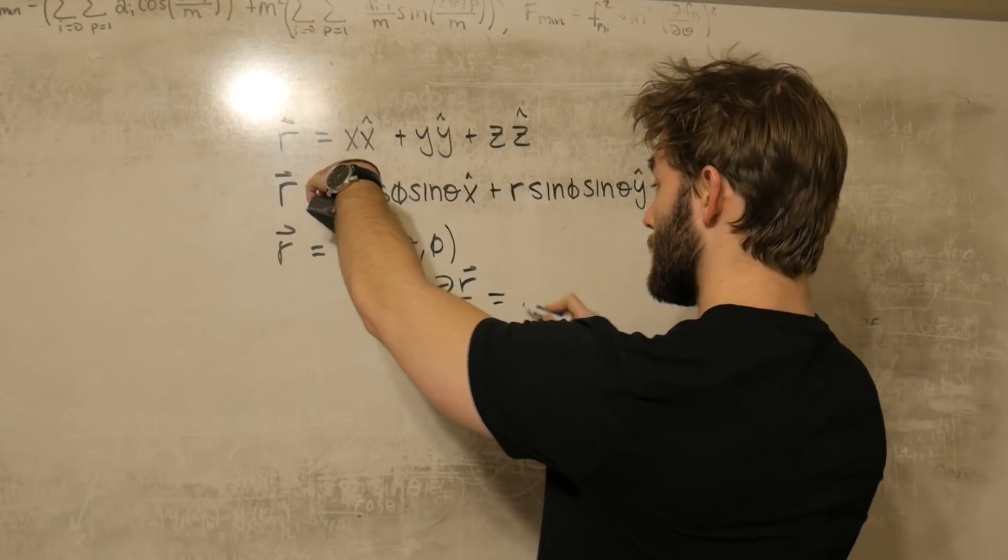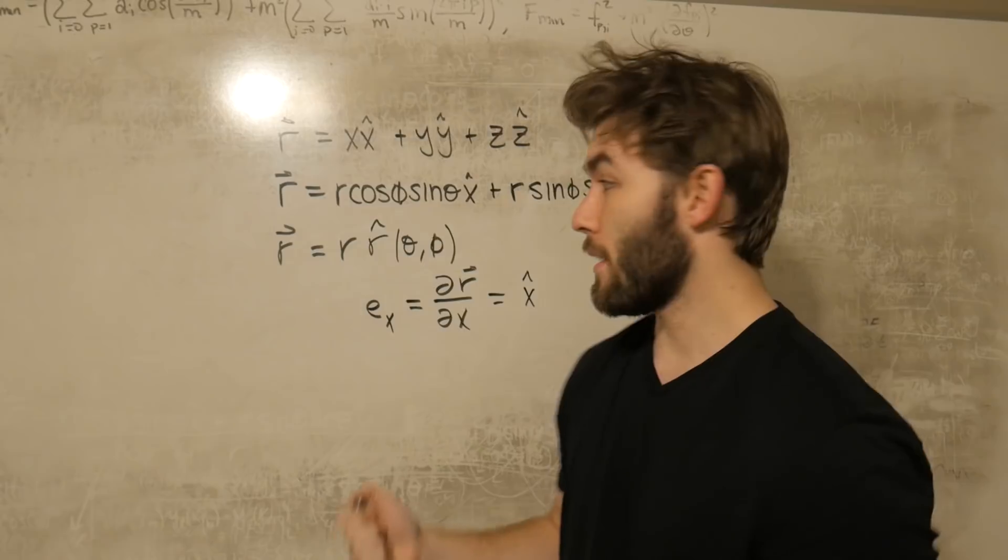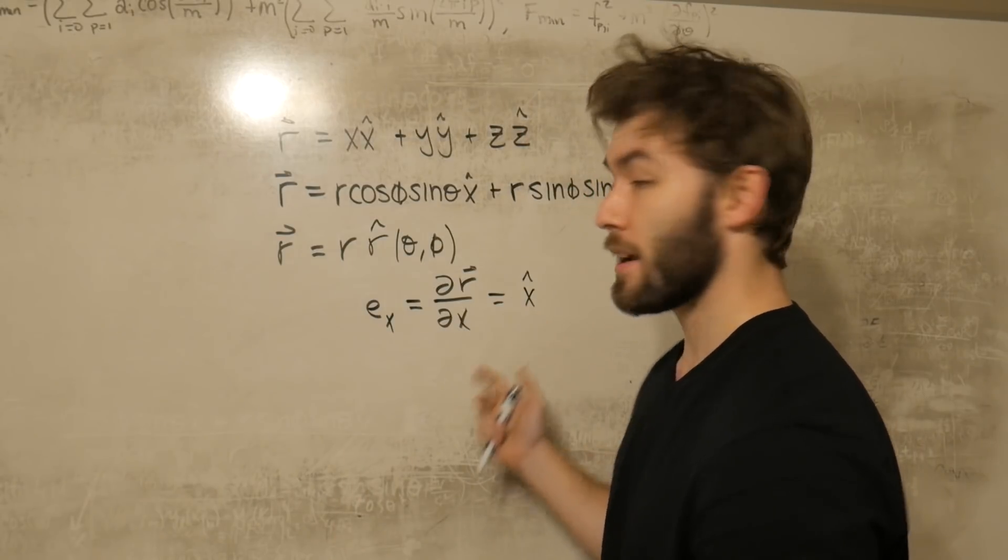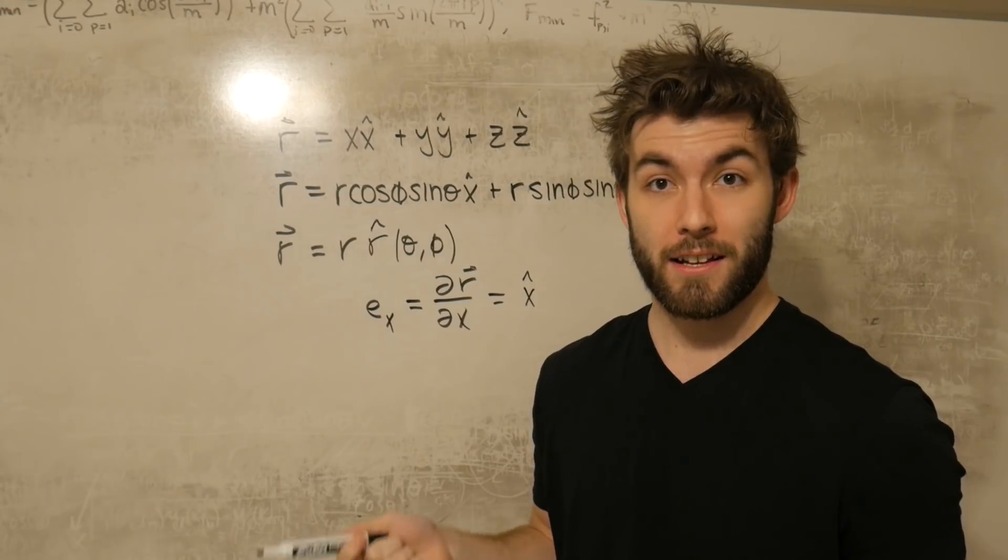And when we do that, we see that this just gets x hat. And what this corresponds to is the fact that the unit vector in the x direction is just x hat. It's just pointing in the direction that x is increasing.